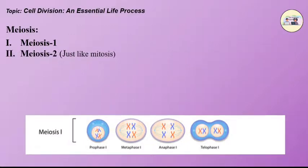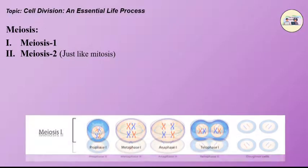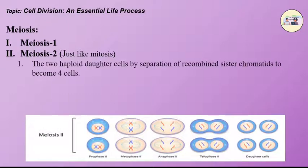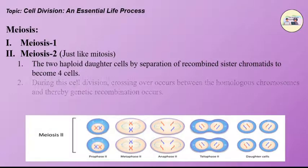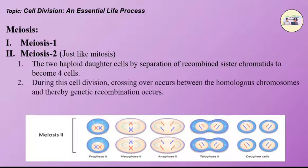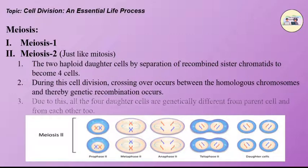Meiosis II is just like mitosis. The two haploid daughter cells undergo separation of recombined sister chromatids to become four cells. During this cell division, crossing over occurs between the homologous chromosomes and thereby genetic recombination occurs. As a result, all four daughter cells are genetically different from the parent cell and from each other.